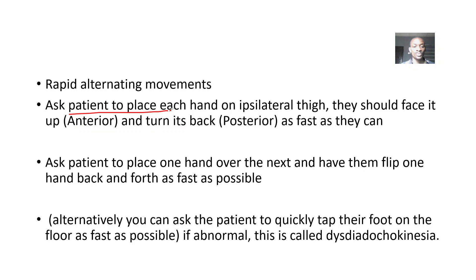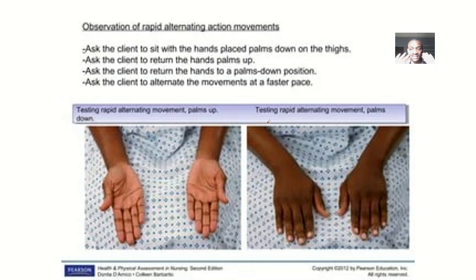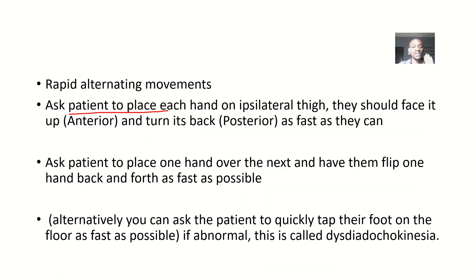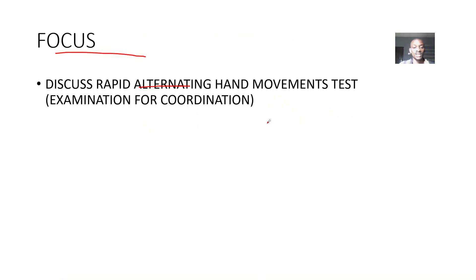You ask your patient to place each hand on the hip's lateral thigh. They should face it up — anteriorly — and then turn it back posteriorly as fast as they can. So you turn it up, turn it down, turn it up, turn it down. That is the rapid hand movement test.